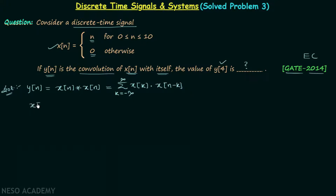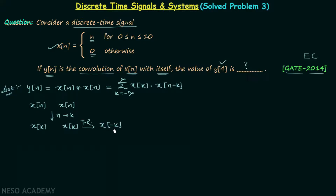To get xk and xn minus k, we first replace variable n by a dummy variable k, giving us signal xk. We leave this xk alone and perform the time reversal operation on the other xk to get x minus k. After this, we perform a time shifting operation by n to obtain xn minus k.